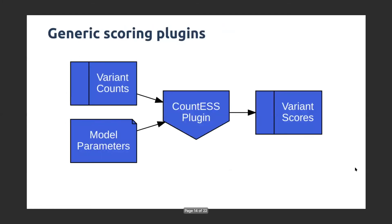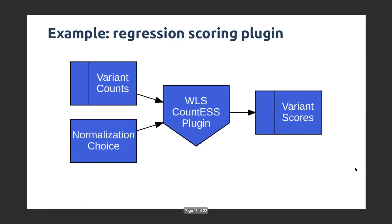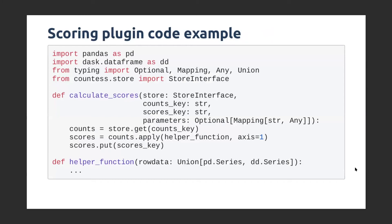In a generic scoring plugin, you provide counts along with some model parameters, and you get scores out — anything that goes in that middle box is fine. So if we have the weighted least-squares regression scoring that Enrich2 does, which a lot of people use for time-series data, you have your counts, a choice of normalization — wild-type normalization or library size normalization or whatever — it goes into the plugin, and then you get variant scores out.